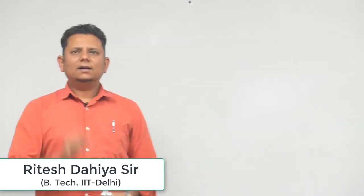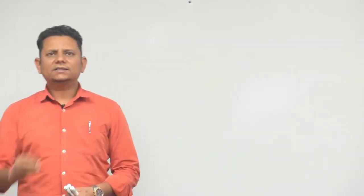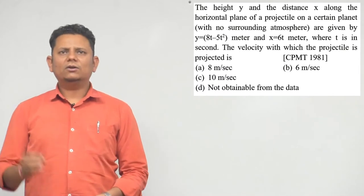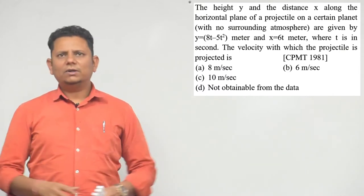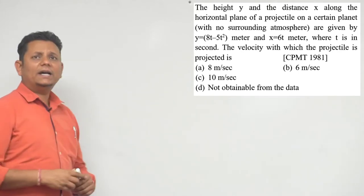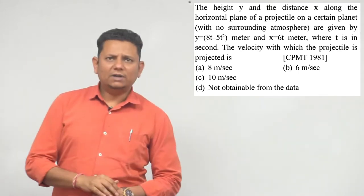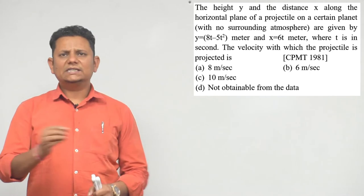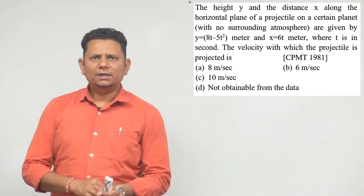The next question says the height y and the distance x along the horizontal plane of a projectile on a certain planet with no surrounding atmosphere are given by y equals 8t minus 5t square meter and x equals 6t meter where t is in seconds.